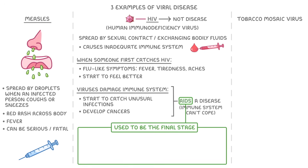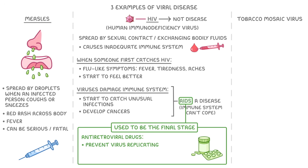This used to be the end of the story, as people would die of random infections or cancer. Now though, we have a group of medications called anti-retroviral drugs, which prevent the viruses from replicating within our bodies. So, as long as people have access to these medications early on in their disease, then they can go on to live normal lives.